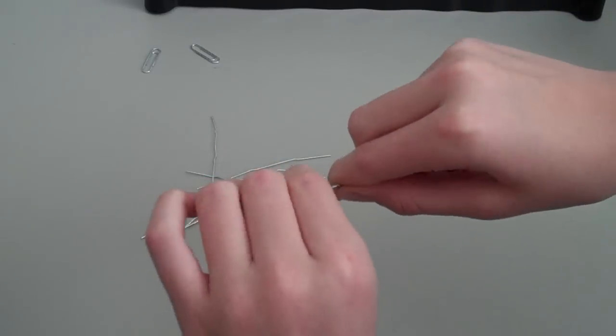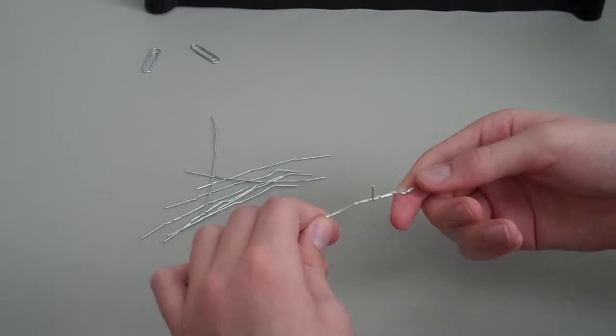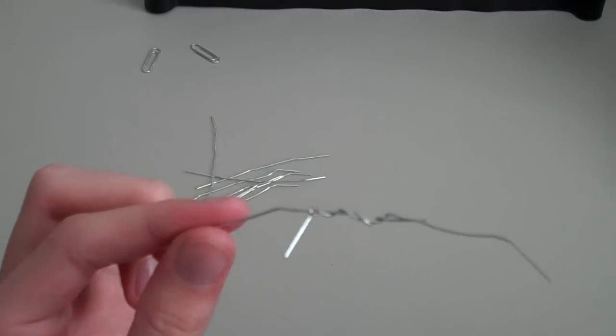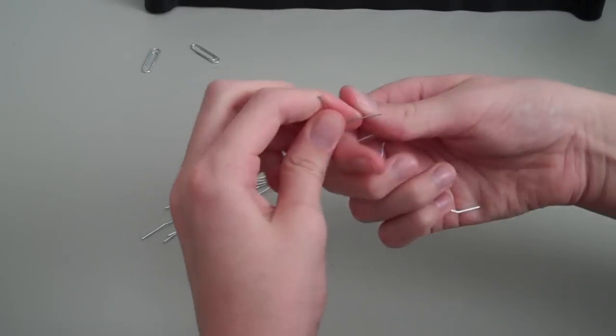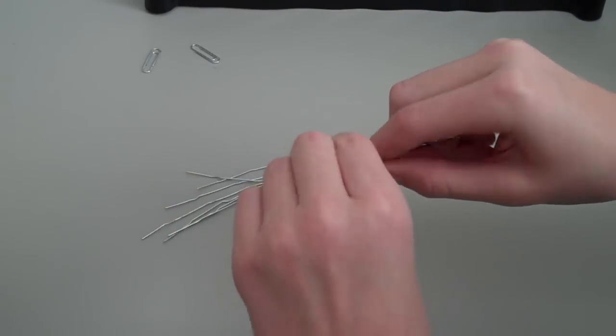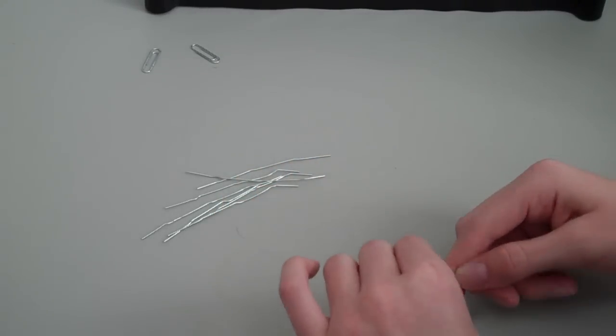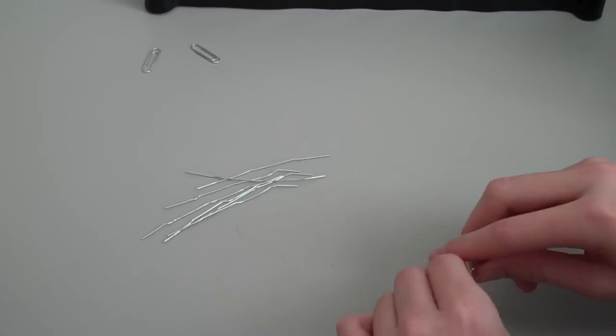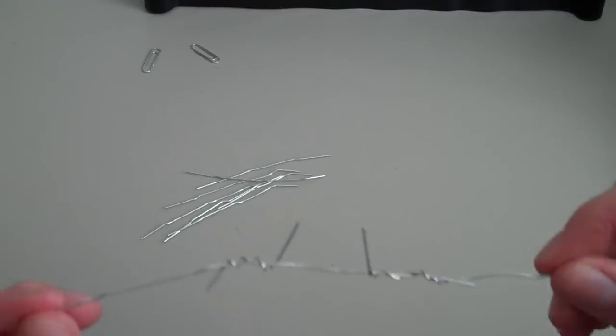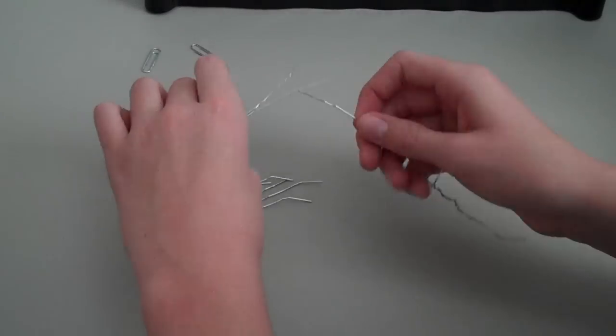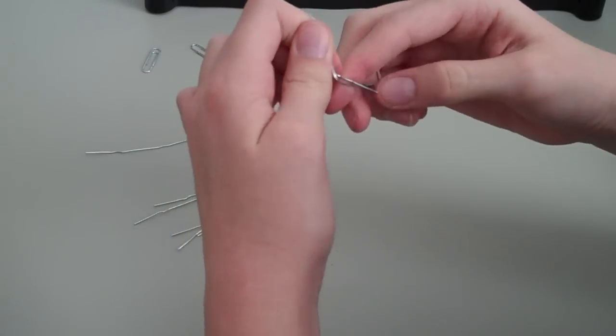Just keep twisting. Now see, doesn't that kind of look like barbed wire? You want to keep going. You want to be careful with this because you could get cut on this. Make sure the line is as straight as possible. You want to twist it in really well. This may take a while depending on how much you're gonna use.